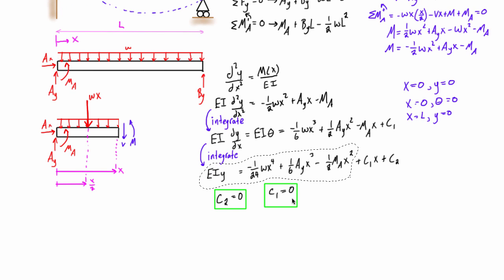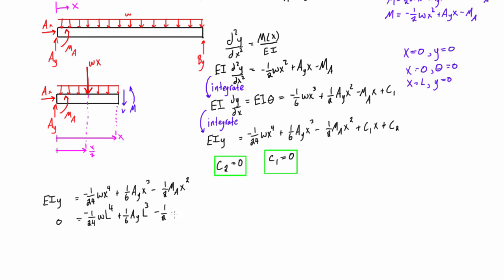We still have one boundary condition that we haven't used yet, where x is equal to L, y is equal to 0. So let's plug those into this expression. We'll set all of the y equal to 0 and all of the x equal to L, and here we have our third equation that we're going to use to solve for our three unknowns. We'll put a blue box around that.